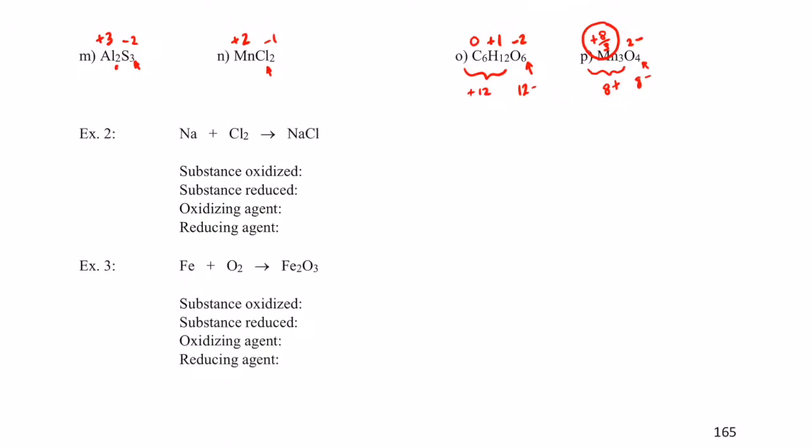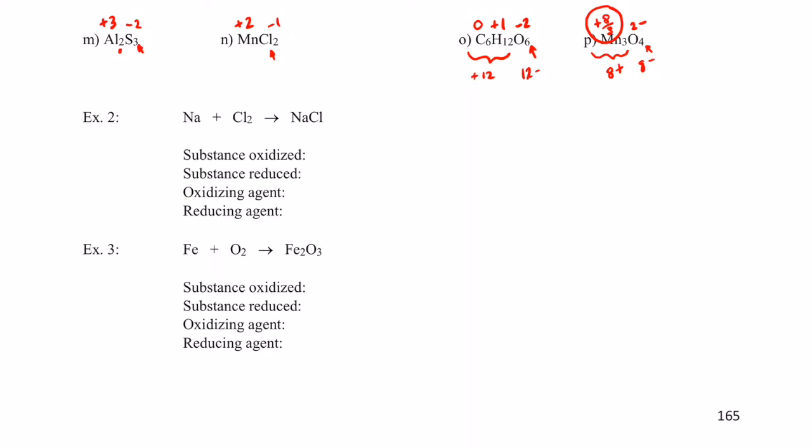Welcome back. Today we're going to apply some of our vocabulary that we learned a couple of videos ago about oxidizing, reducing, oxidizing and reducing agents, along with our newfound ability to determine oxidation numbers. Let's take a look at this example in our notes where we have a simple reaction of sodium reacting with chlorine gas to produce sodium chloride. Let's go ahead and assign each element or species in this reaction an oxidation number.